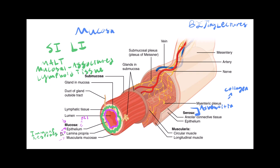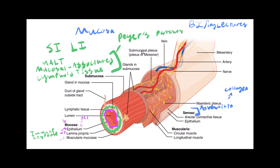The stomach doesn't really have MALT — the lamina propria there just holds the epithelium in place. You really see the MALT tissue inside the large and small intestines. These MALT immune cells form groups called Peyer's patches, which are large clusters of mucosal associated lymphoid tissue found inside the lamina propria.